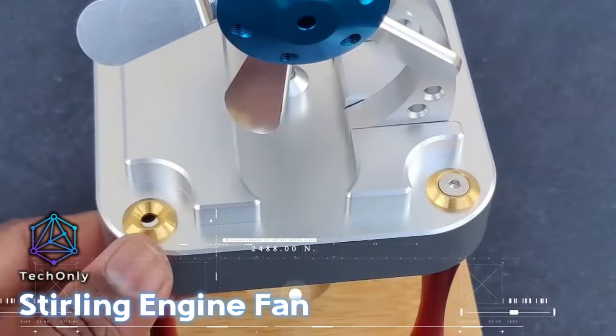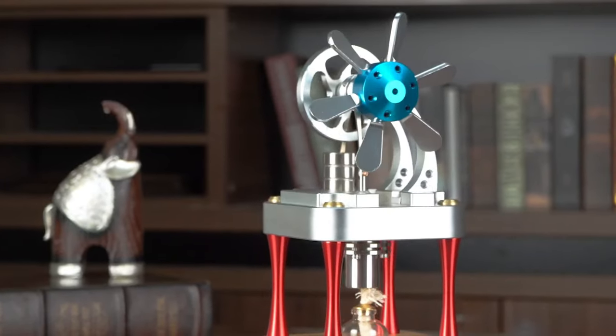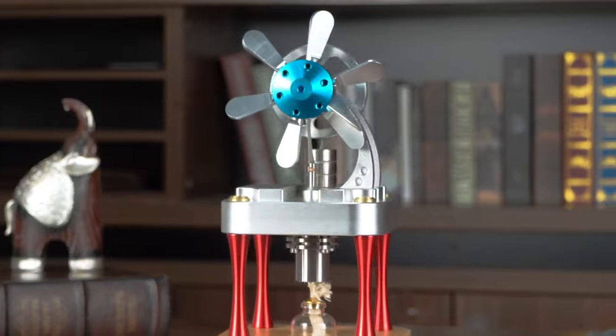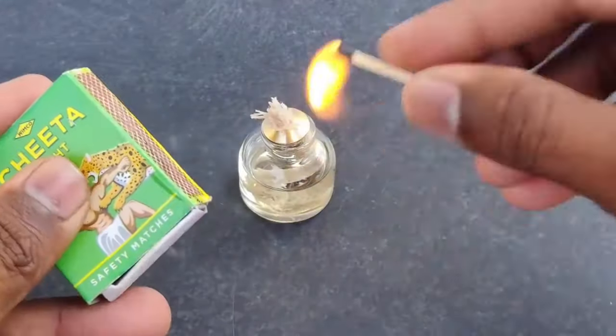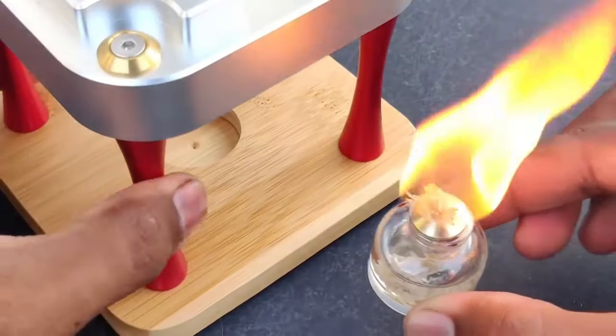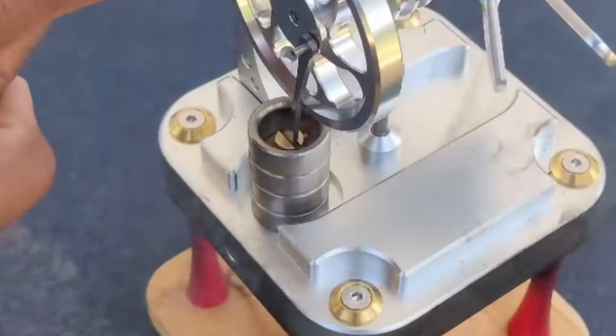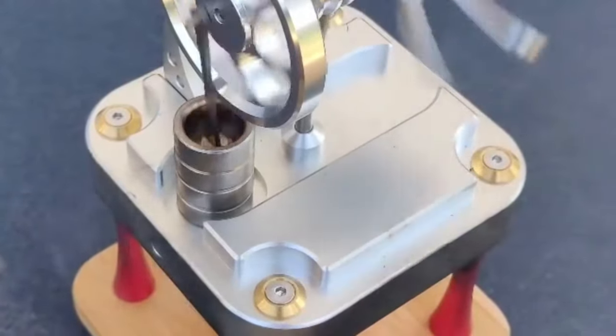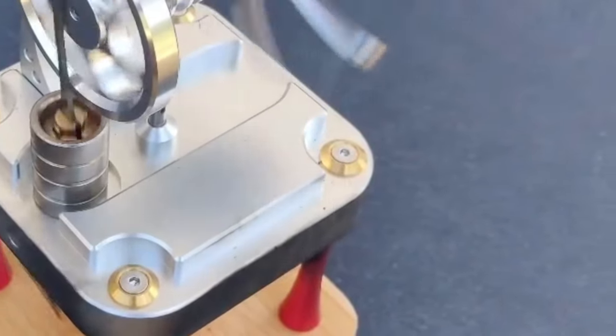This is a practical and functional model that uses the power generated by the engine to operate a fan, demonstrating the potential real-world applications of Stirling engines. The heating cylinder is made of 304 stainless steel, the piston is made of brass, and the power cylinder is made of alloy steel. This model comes with a single cylinder and a single flywheel, which is enough to operate the fan.